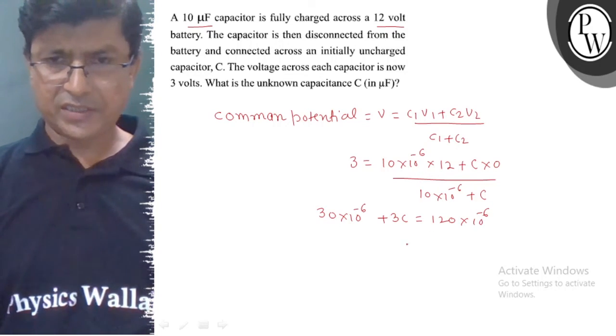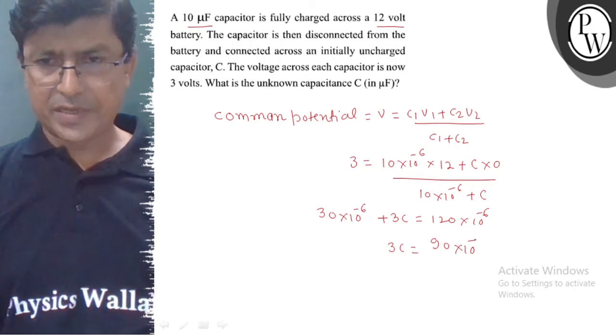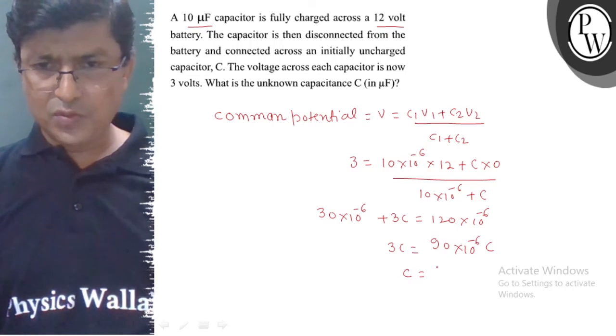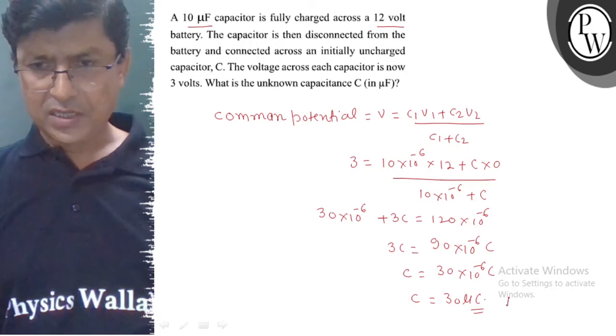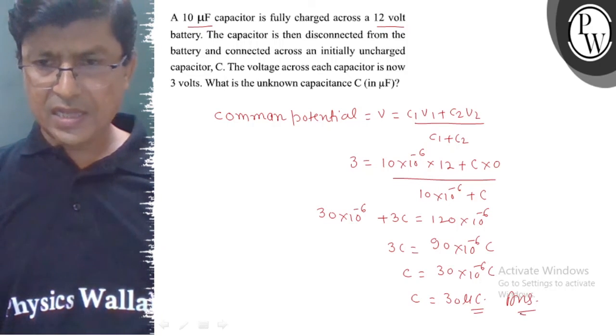Here we have C value equal to 90 into 10 to the power minus 6. Or C value is 30µF. This is our answer.